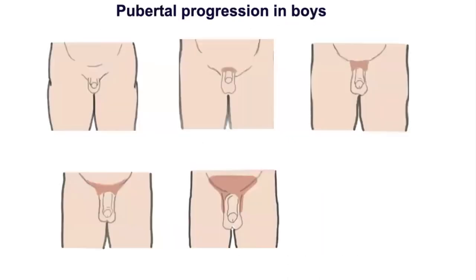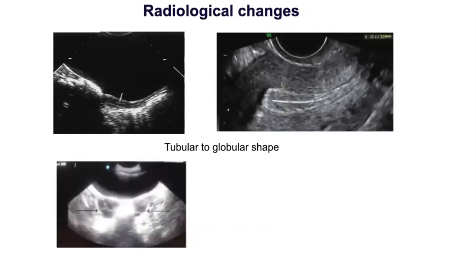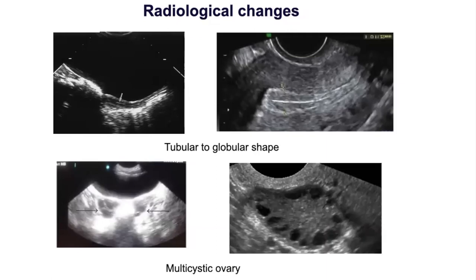The uterus is easily detected in the newborn period due to transplacental presence of estradiol. It becomes very small in the pre-pubertal period and can be easily missed on transabdominal ultrasound. Therefore, transabdominal ultrasound should be assessed carefully before reporting an absent uterus in a female child.